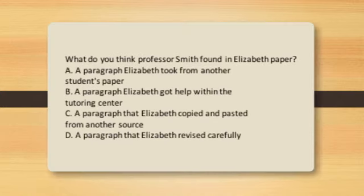What do you think Professor Smith found in Elizabeth's paper? Key items to remember were that Elizabeth used complex sentence structure. The paragraph was perfect, and this was a beginning writing class. Thinking about these details makes C — a paragraph that Elizabeth copied and pasted from another source — the most likely answer.